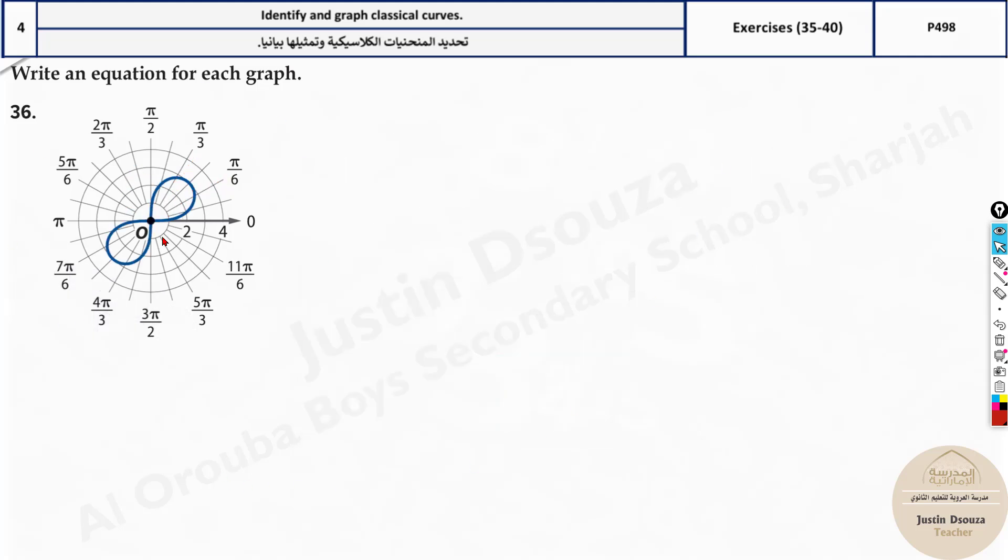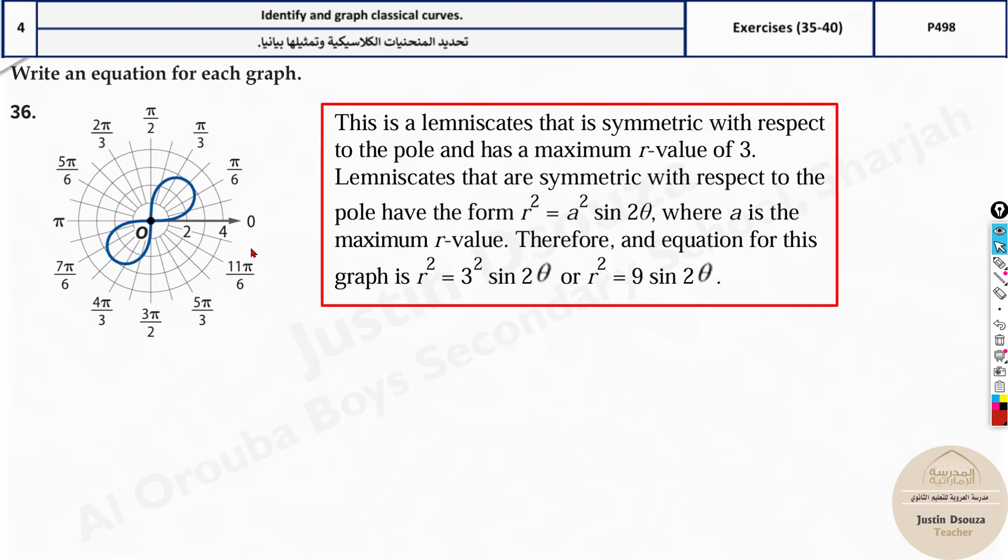Now here we have a lemniscate. If you look at such a graph it's lemniscate. Graphing them can be a bit tricky, but now you know this is a lemniscate. There will be four options. These options are generally in terms of a square sine 2θ. Looking at the standard form you can easily tell, but imagine you can't remember the standard form. You need the calculator method. Then it's fine.